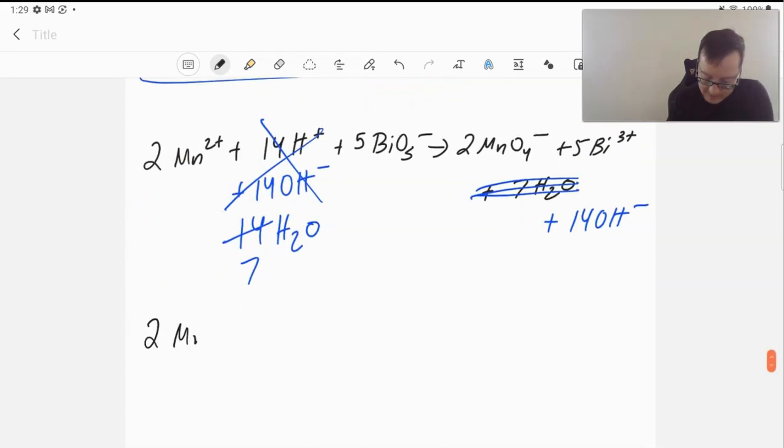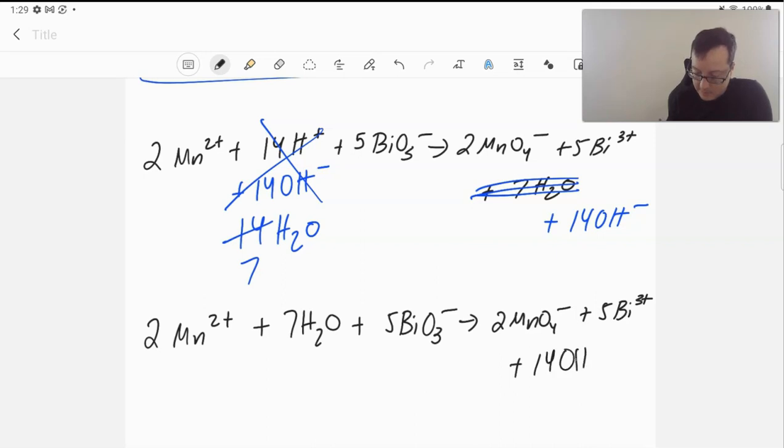Two Mn2+ plus seven waters plus five bismuth species gives two permanganates, five Bi3+ ions, plus 14 hydroxides. That's how you would balance that one in basic conditions as well.